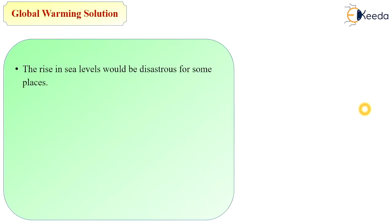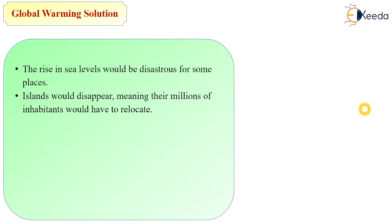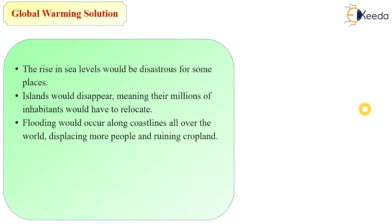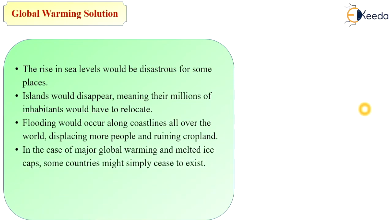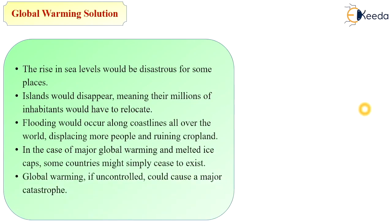The rise in sea level would be devastating for some places. Islands would disappear, meaning millions of inhabitants would have to relocate, and ecosystems would be affected. Flooding would occur along coastlines worldwide, displacing more people and ruining cropland. In the case of major global warming and melted ice caps, some countries might simply cease to exist. Global warming, if uncontrolled, could cause a major catastrophe.